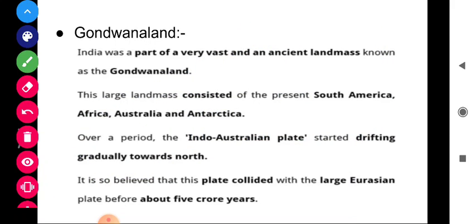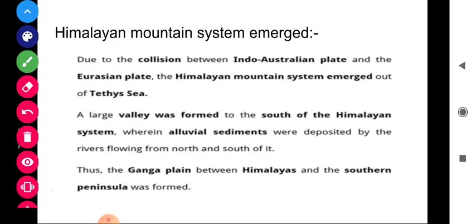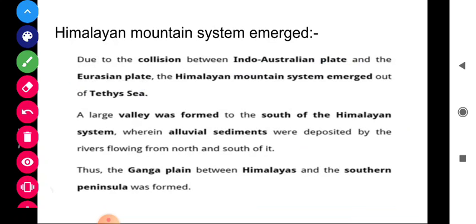It is believed that the Indo-Australian plate collided with the large Eurasian plate about 5 crore years ago. Where the Himalayan ranges are today, these plates collided and the Himalayan mountain system emerged. A large valley was formed to the south of the Himalayan system, wherein alluvial sediments were deposited by rivers flowing from the north and south. This led to the formation of the Ganga Plains between the Himalayas and the peninsular plateau.